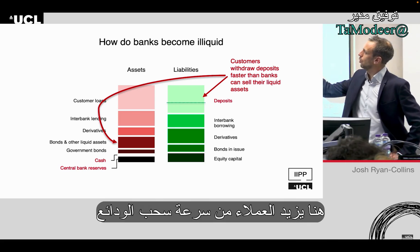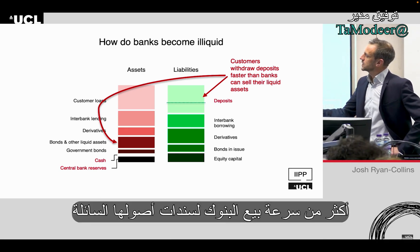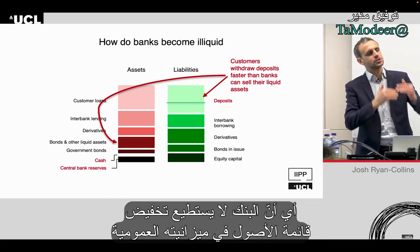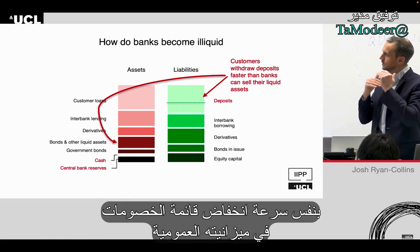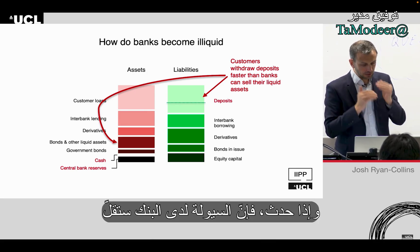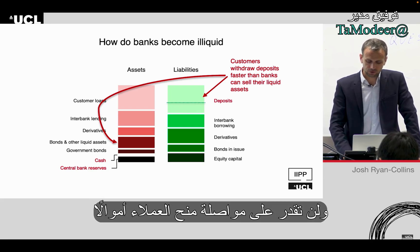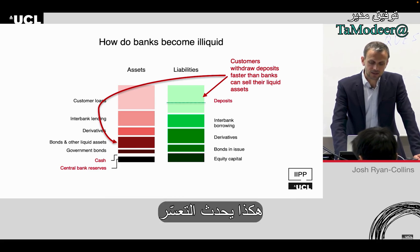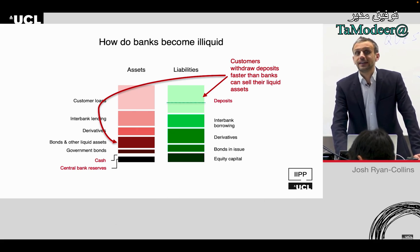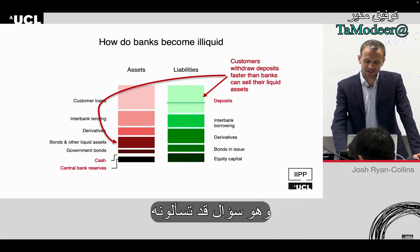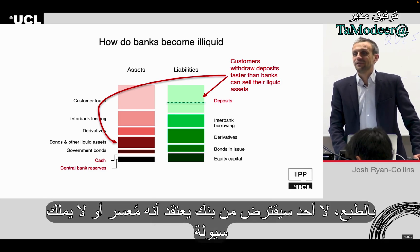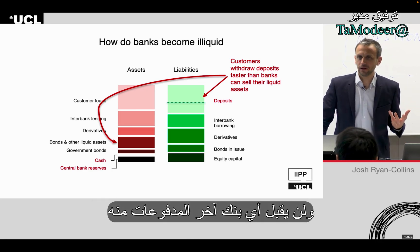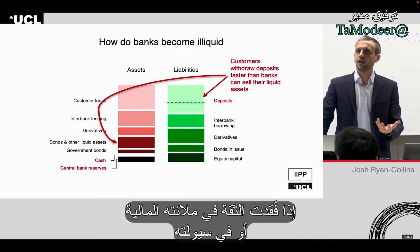How do banks become illiquid? Customers withdraw deposits at a faster rate than banks can sell their liquid assets — bonds, for example, such as government or corporate bonds. This means the bank can't reduce the asset side of its balance sheet as fast as the liability side is falling. If that happens, the bank eventually becomes illiquid, can't pay out money to customers, and will have to go into receivership. Even though banks can create money, people won't borrow from a bank they think is illiquid or insolvent, and no other bank will accept payments from it if confidence is lost.